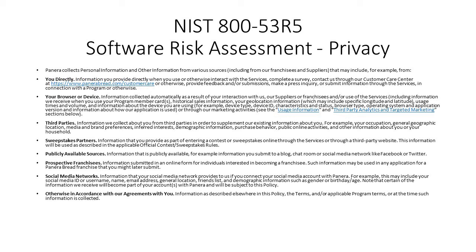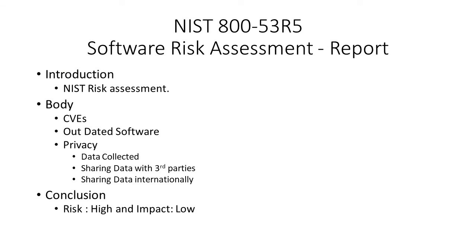The last thing is writing a report to management so they understand your risks. The top-level introduction would cover NIST, the risk assessment RA, the vulnerabilities, the CVEs, and getting a B in the browser scan — which is dangerous. For privacy: what data they collect on you and what data gets shared with third parties. For the conclusion, for Panera Bread, the risk would be rated high — the CVEs, the B grade, all the vulnerabilities, sending privacy data overseas, sharing with third parties, and the volume of privacy information collected.